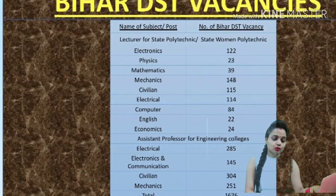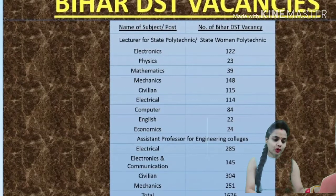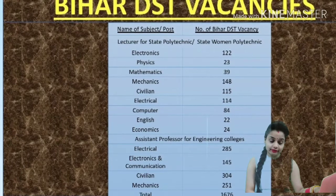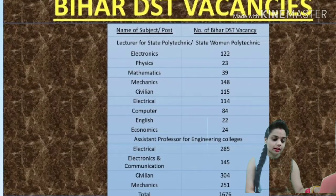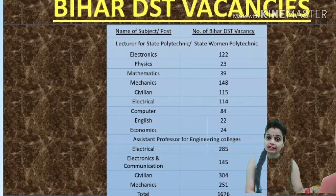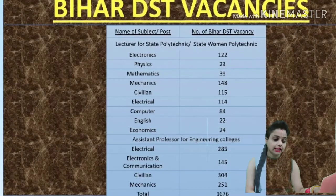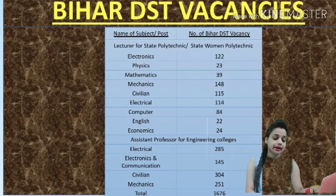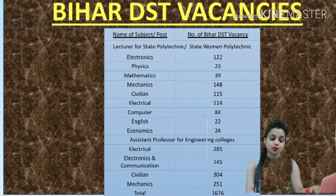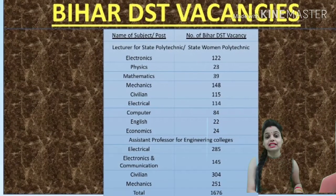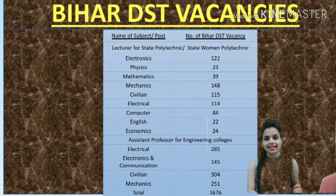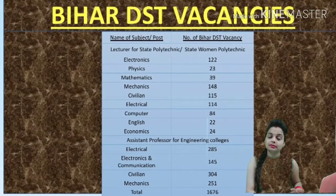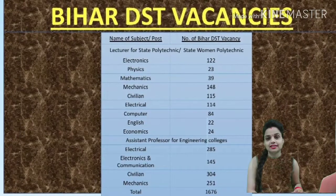For Assistant Professor posts in Engineering Colleges: Electrical has 285 vacancies, Electronics and Communication has 145 vacancies, Civil has 304 vacancies, and Mechanics has 251 vacancies. The total comes to 1676 vacancies required. This is a big criteria for vacancies - you can fill the form if you have the required qualification for those subjects.